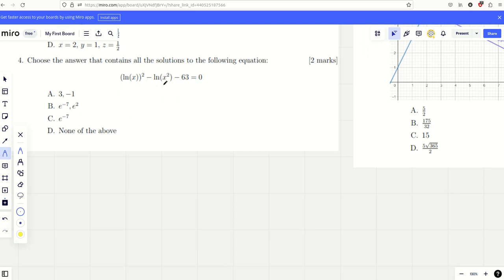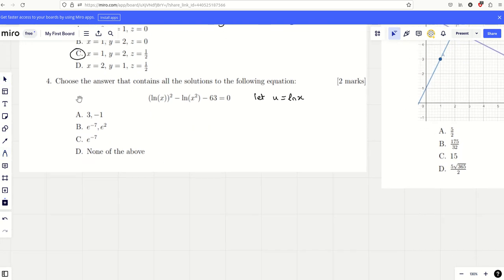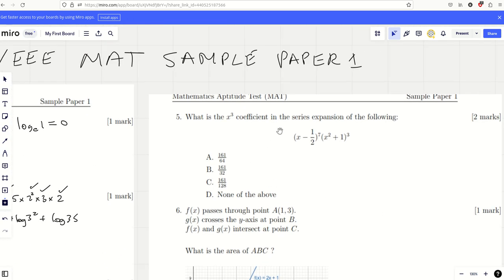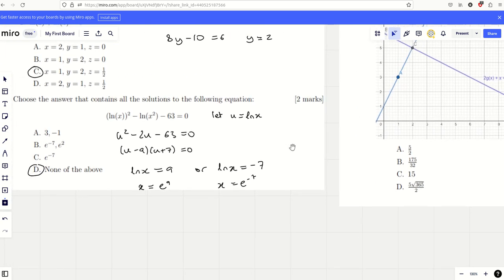This one, I hope you can see immediately, it's a disguised quadratic. Let u equal ln x. So you've got u squared minus 2 ln x which is minus 2u minus 63 equals 0. So u minus 9 times u plus 7 equals 0. It looks like ln x equals 9 or ln x equals minus 7. Now if you undo that, you can have x equals e to the power of 9 or x equals e to the minus 7. They started putting this 'none of the above' in it, and it is sometimes the answer. Watch out for the none of the above. It is none of the above, so be careful.